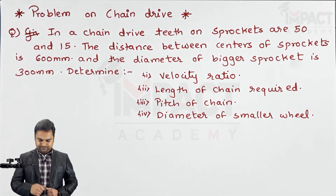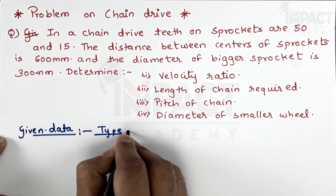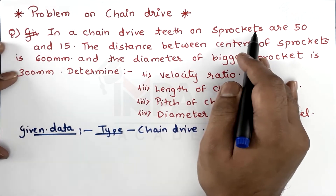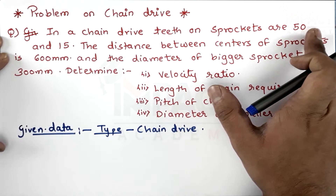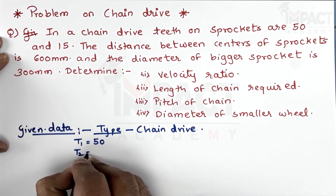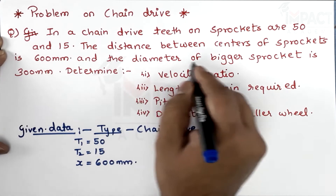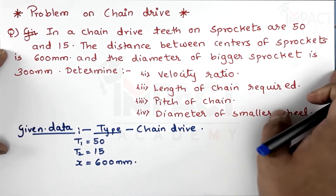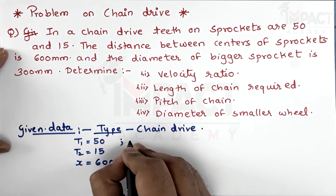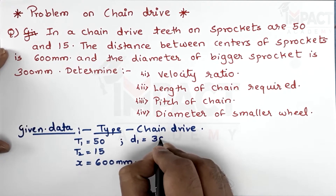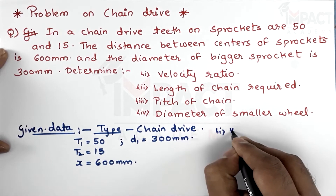Let's write the given data. The type of drive is chain drive. Teeth on sprockets: t1 = 50 (driving sprocket) and t2 = 15 (driven sprocket). The distance between centers of the sprockets is x = 600 mm. The diameter of the bigger sprocket, which has t1 teeth, is d1 = 300 mm.